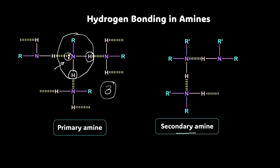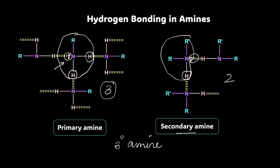For a secondary amine, there is one hydrogen and one lone pair. So per molecule, only two hydrogen bonds are possible. Whereas for a tertiary amine, there is no hydrogen which is present that can show hydrogen bonding — this is how we write a tertiary amine. So zero hydrogen bonding is possible in a tertiary amine.